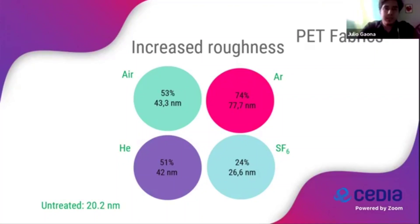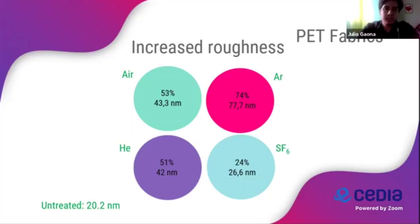In this study, a cold plasma treatment was carried out with different gases to observe their behavior and improve compatibility and wettability. The results with respect to RMS showed an increase of 70–40% with argon and 24% with sulfur hexafluoride, because sulfur hexafluoride can impart water-repellent properties to the samples. For this reason, it has a very low RMS, while argon improves the surface properties.